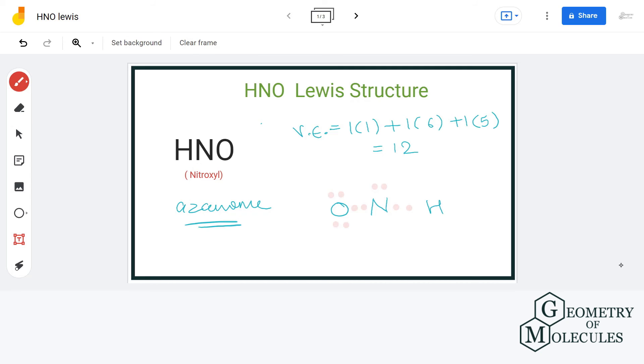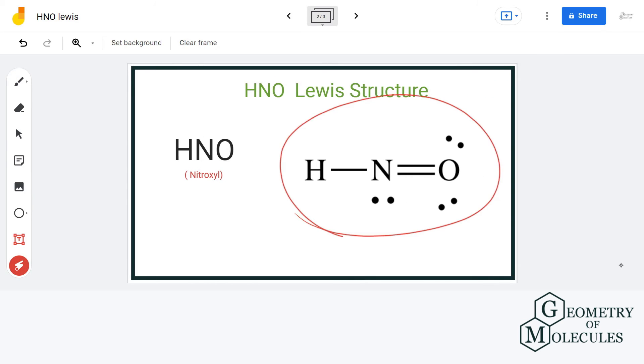To avoid that, what we will do is shift electrons from the oxygen atom to in between nitrogen and oxygen. That will result in formation of a double bond. So this is the final Lewis structure of HNO, in which every atom has a complete outer shell and zero formal charge.